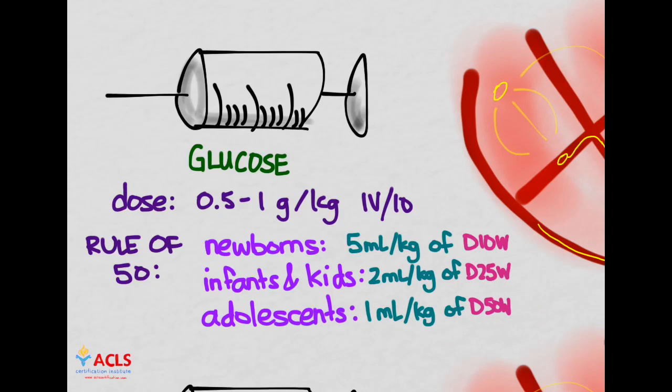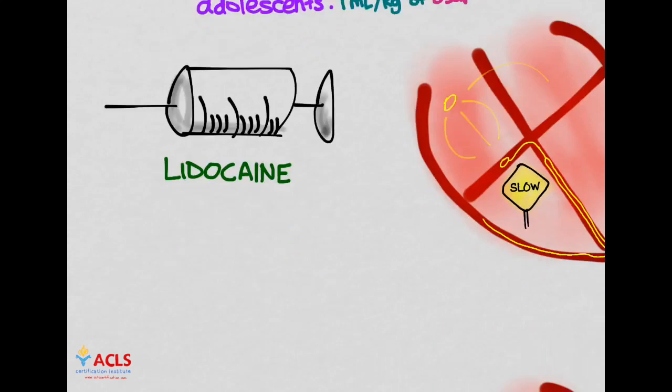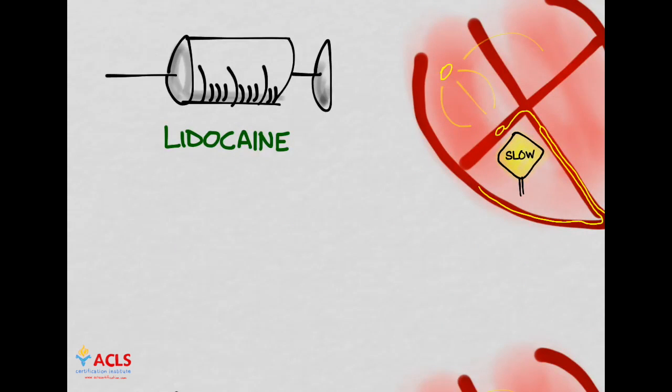The next medication is lidocaine. Lidocaine works by decreasing arrhythmias. It slows down conduction through the heart and decreases automaticity. It's not as effective as amiodarone, though. No study has shown that lidocaine or amiodarone improves survival to discharge from the hospital.